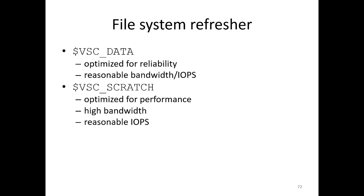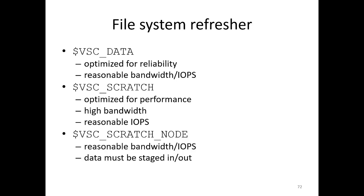On the other hand, there is VSC Scratch, which is optimized for performance — it has high bandwidth and a reasonable amount of IOPS. VSC Scratch Node is individual scratch space on a node with reasonable bandwidth and IOPS, but data must be staged in and staged out, since you don't have access to VSC Scratch Node once your job has finished.